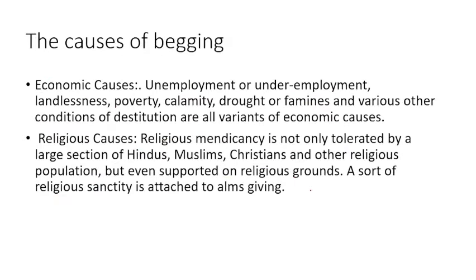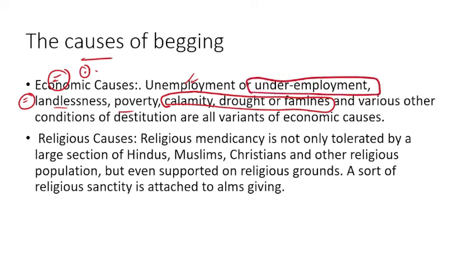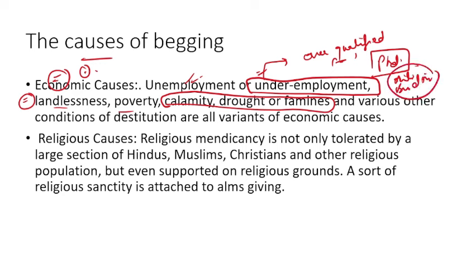Causes of begging: Economic causes include poverty, landlessness, calamity, drought, famines, unemployment, and underemployment. Underemployment is different from unemployment — it is when a person's job is far below their skill level, for example a PhD scholar driving an auto or becoming a bus driver due to lack of appropriate jobs. This reflects a structural economic problem.